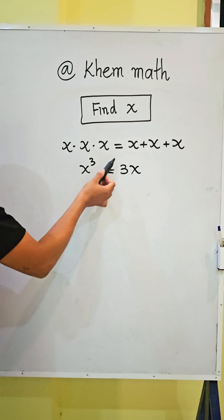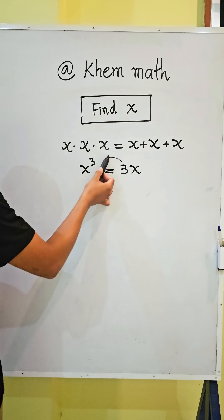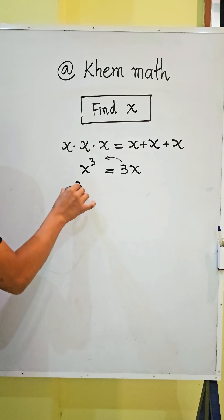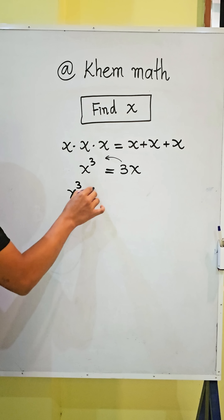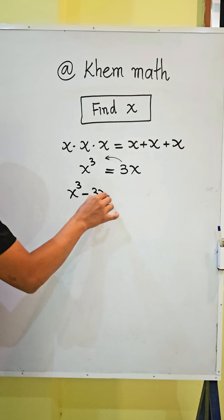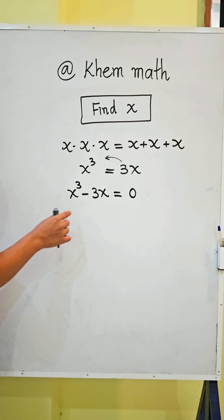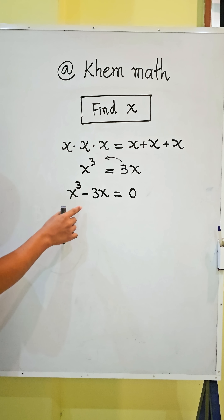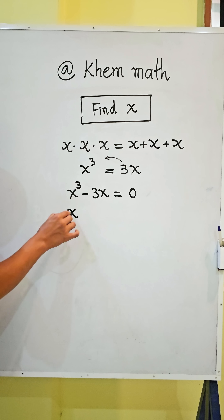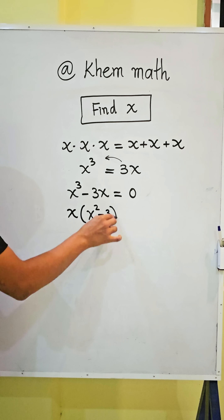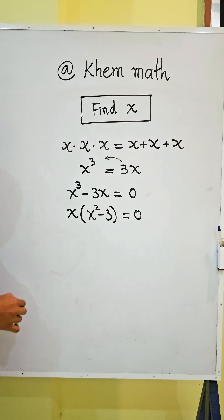And now, we move 3x from the right hand side to the left hand side. So we get x cubed minus 3x equals 0. Then we take x as a common factor, so we get x times x squared minus 3 equals 0.